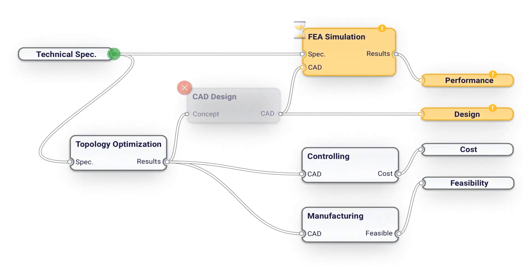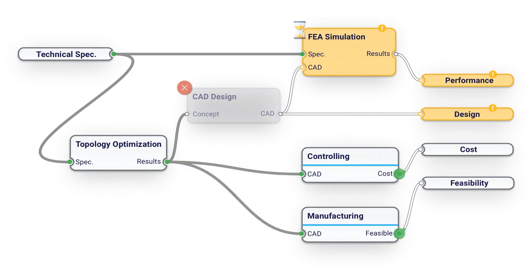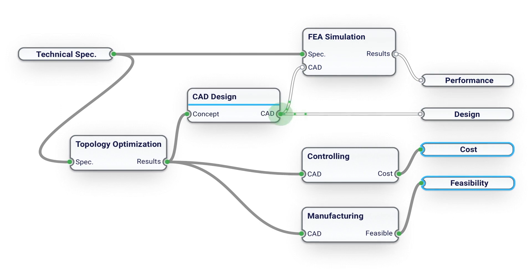When several components are linked to each other, a logical sequence can be implemented. If the data for one component is not yet available or if this component is stopped, all dependent components will pause. In this way, we can visually program several engineering steps and even digitalize a complete product development process. Now all results are available, and complex processes can be run through automatically as part of an optimization.